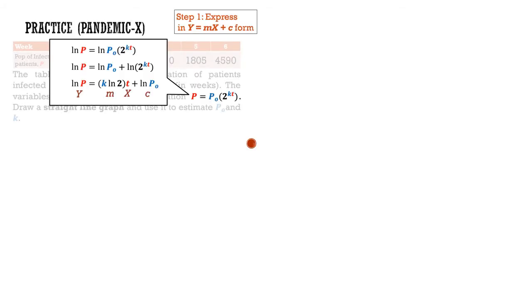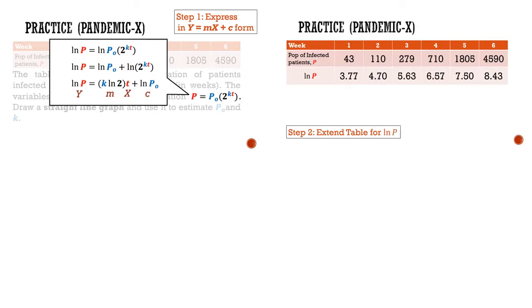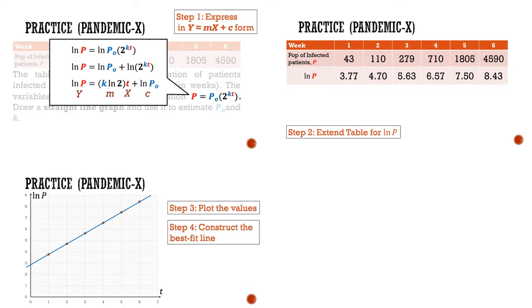In the second episode, we learned how to construct a Linear Law graph from a given set of experimental data. First, by converting the model into the form y equals mx plus c. Second, we extend the given table to include the x and y. Then we plotted the values and constructed the best fit line.